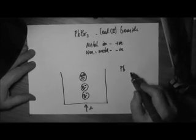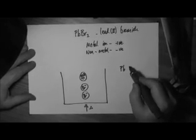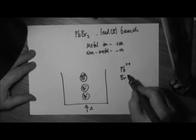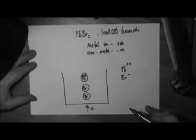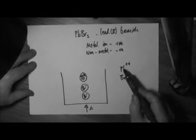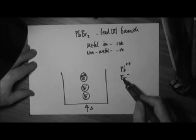Now you can tell the charge on the lead ion because it's called lead two bromide. Bromide ions always have a charge of minus one. So when you represent one of these molten systems, you've got to keep the ratio one ion to two bromide ions intact.